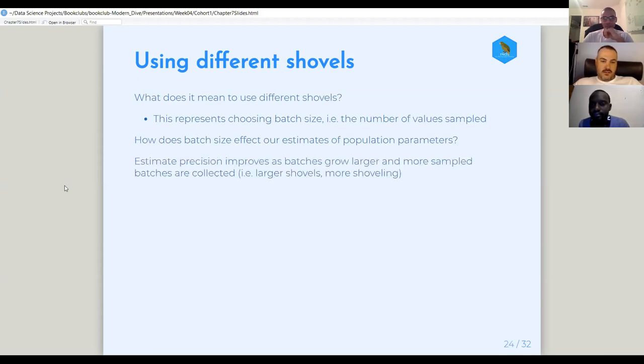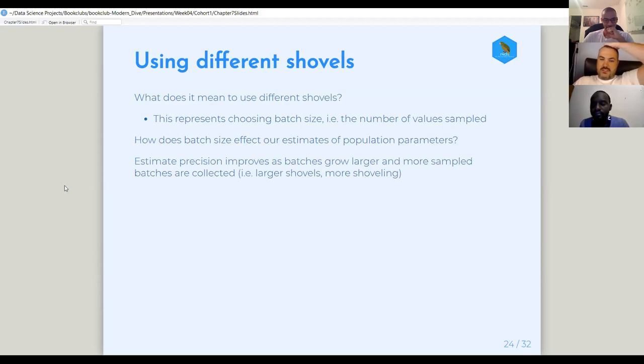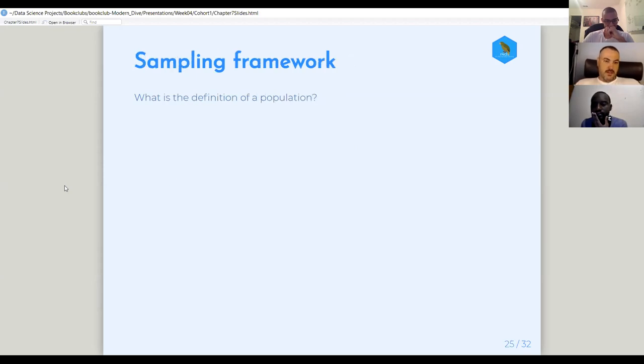Because the error is reduced the larger your sample. Exactly. Yeah. So the larger your sample, the more like the population it possibly could be. And in addition, so you got the larger the sample, and additionally, the more samples—the larger shovels will also improve your estimation. So larger shovels, more shoveling to improve your estimation.